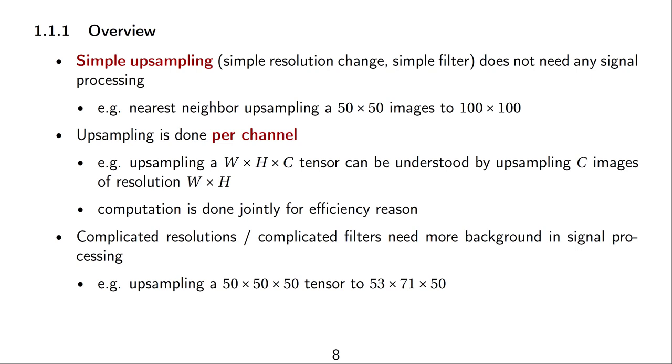Of course, computation is done jointly for efficiency reasons, but to understand how this upsampling works, it's best to think of one channel at a time and then all of these c channels do the same computation. Also, it's important to note that the different channels don't interact with each other when upsampling is performed. They might interact after, or someone can do a joint upsampling and a convolutional operation, but for our purposes it's best to think of upsampling as something that is done per channel.